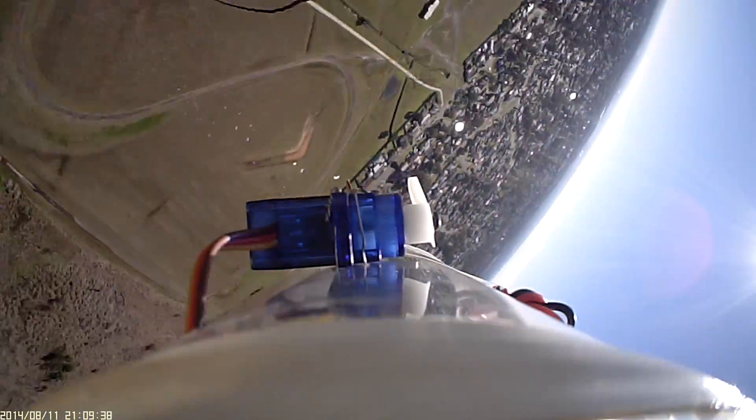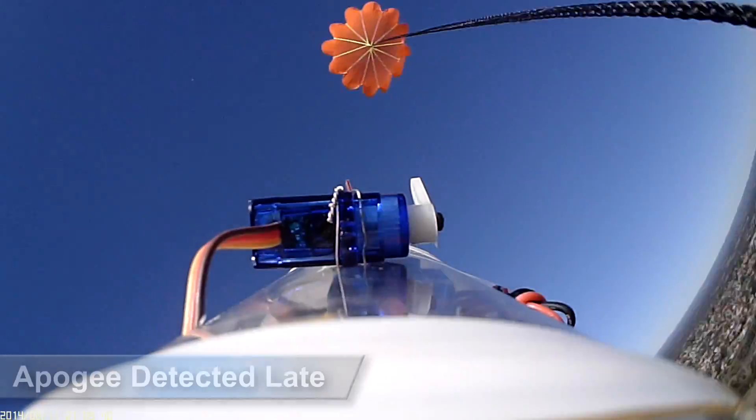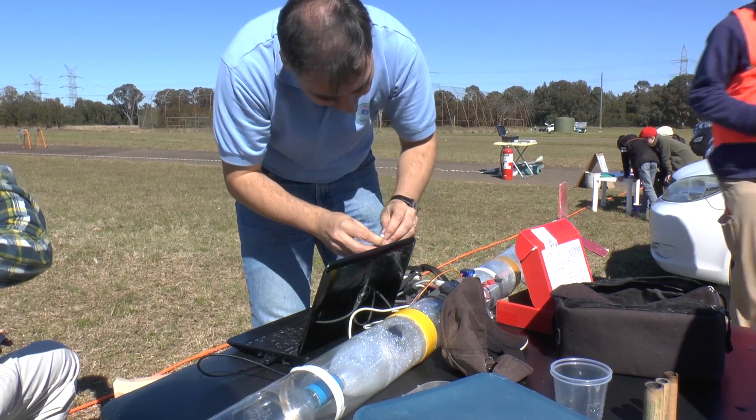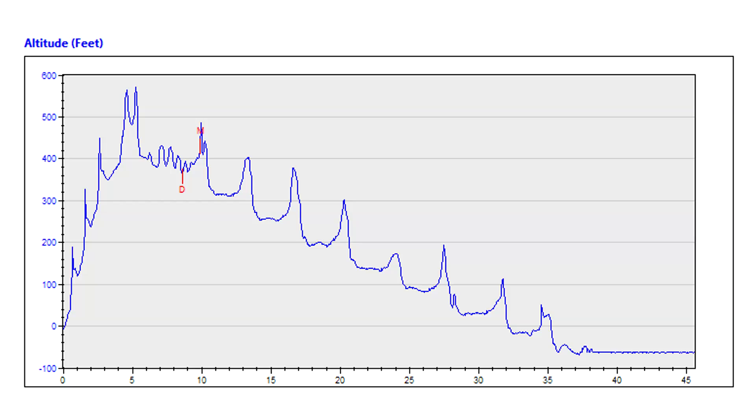After landing we reviewed the onboard footage and noticed that the apogee was detected really late which wasn't that good. So we downloaded the data from the Stratologger and had a look at the altitude graph. As you can see there's quite a few light spikes that confused the Stratologger. Here is where it thought apogee was.